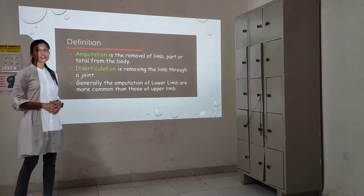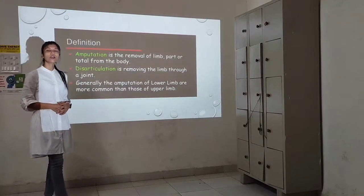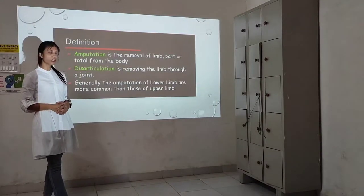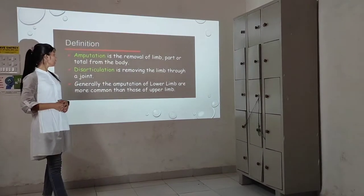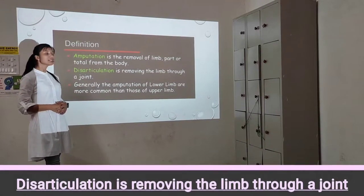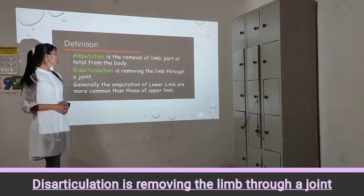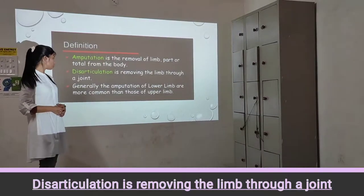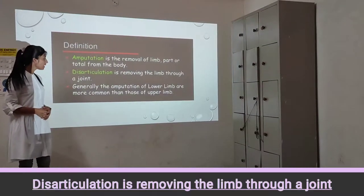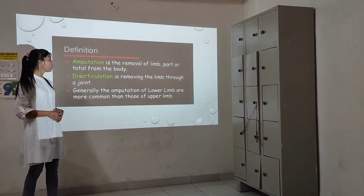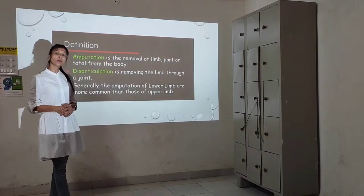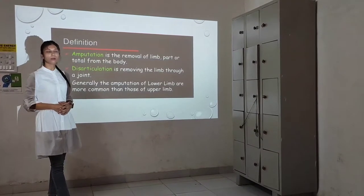Disarticulation is totally different from amputation. Disarticulation is the removal of a limb through the joint. Generally, amputation of the lower limb is more common than the upper limb.